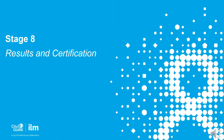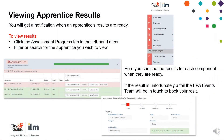Results and Certification. You will get a notification in the notifications bell on the dashboard when an apprentice's results are ready. To view results, click on Assessment then Assessment Progress on the main menu on the dashboard. Filter or search for the apprentice you wish to view. Here, you can see the results for each component as and when they are ready.